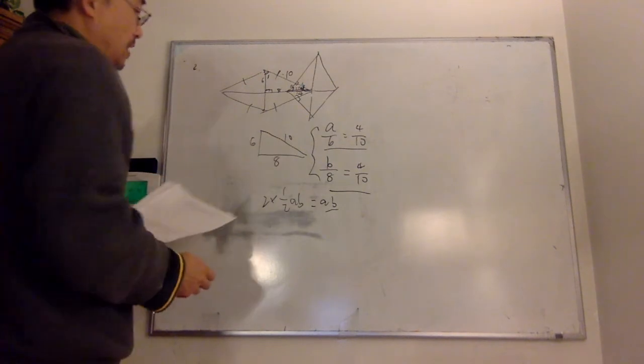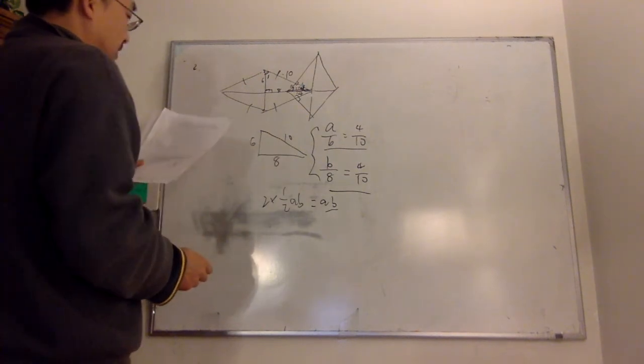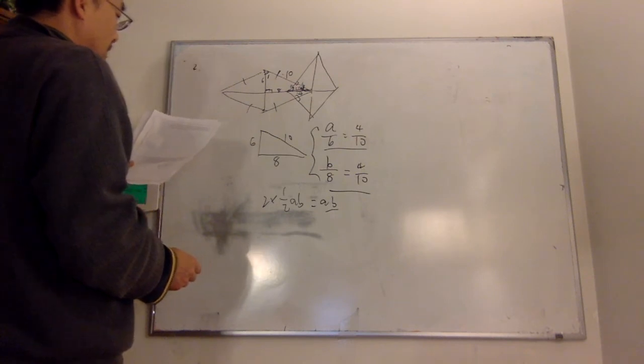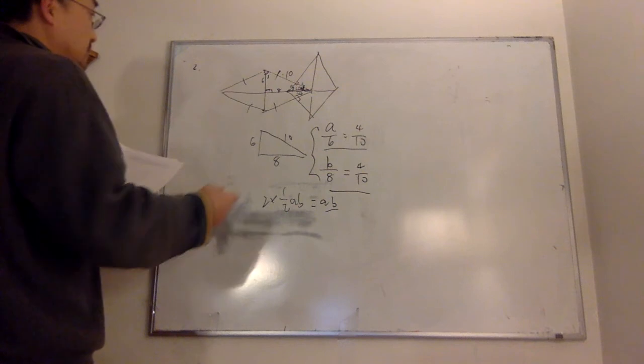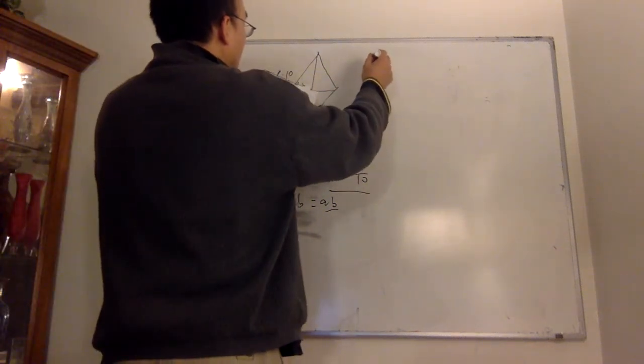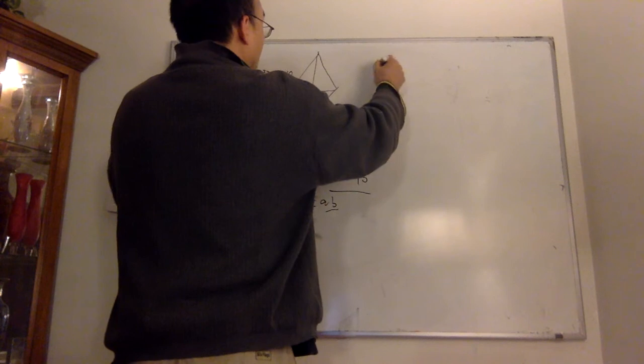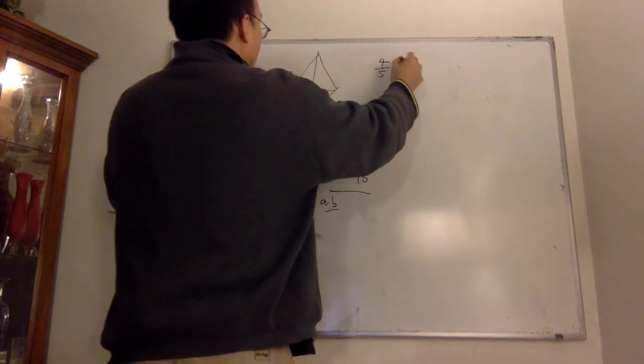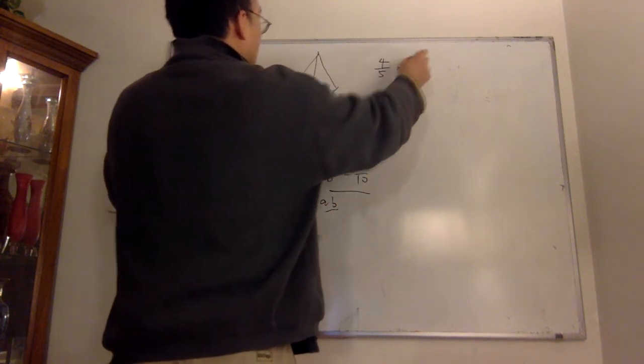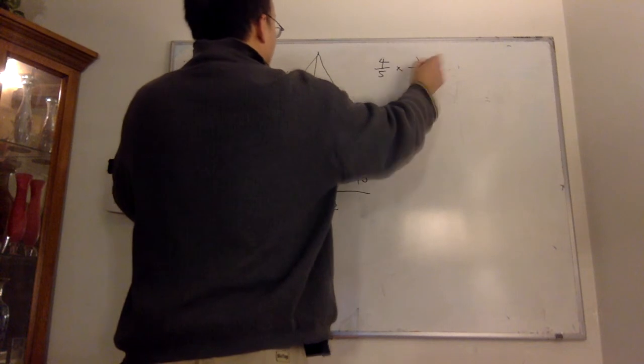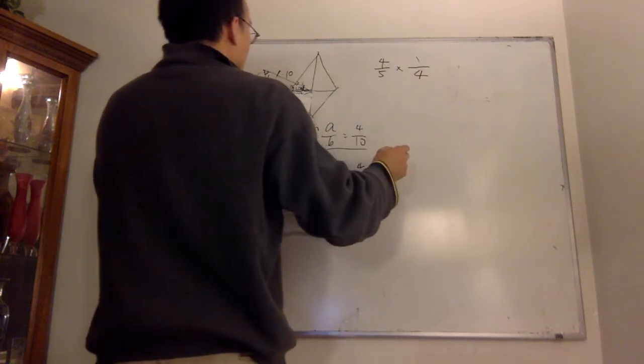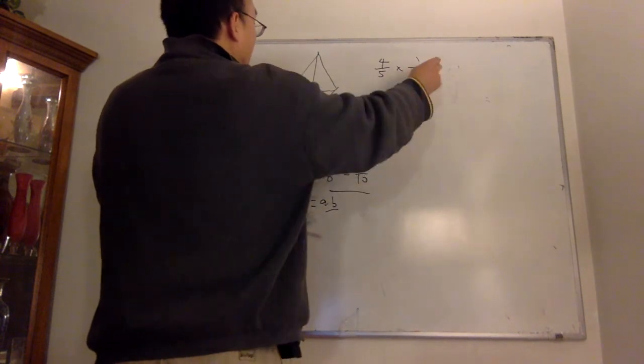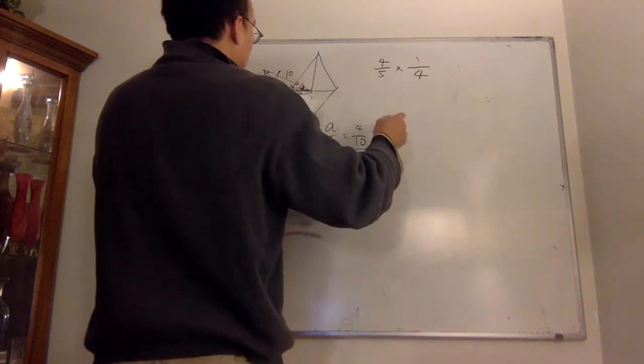This is a standard probability problem. So, for Chloe to win, the first clock draw must be one of the chocolates. So, it has to be 4 over 5. Then, Chloe must pick the one fruit out of the four remaining treats.